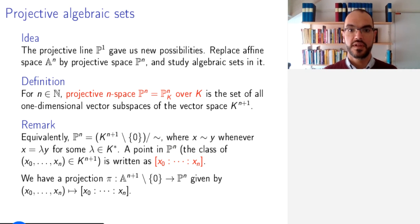The point in P^n, the class of a point (x_0, ..., x_n) in K^{n+1}, we write with square brackets and colons between the coordinates. This gives us a projection from affine space bar the origin to projective space, where we map each point to its class.